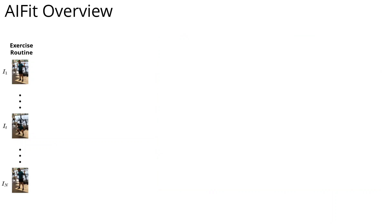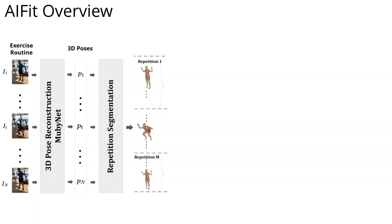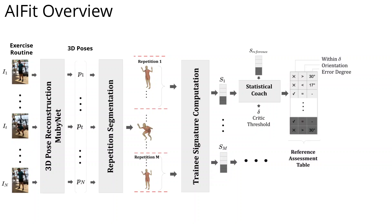Here we show an overview of our method. Given an exercise routine of a trainee, we first perform 3D human reconstruction. The sequence of 3D skeletons is then fed to our repetition segmentation algorithm. We then compute a signature for each repetition of the trainee, which we compare to the reference signature of the instructor under a critic threshold. This global parameter determines how critical the system should be of a trainee's performance. The statistical coach then populates a reference assessment table, based on which a grammar generates natural language feedback.